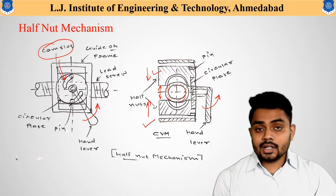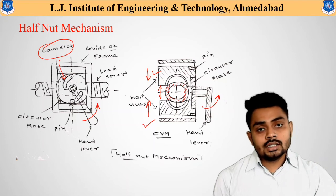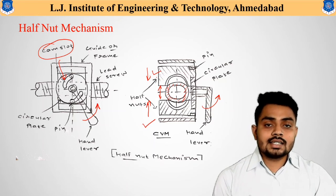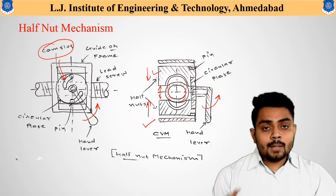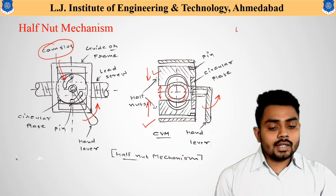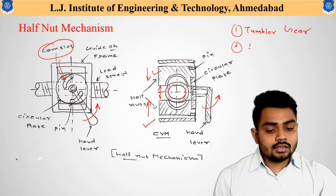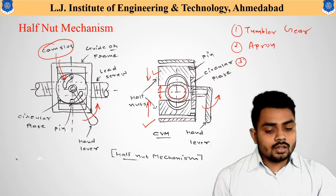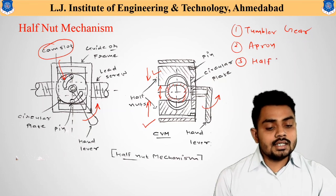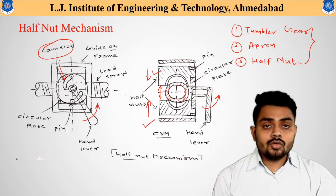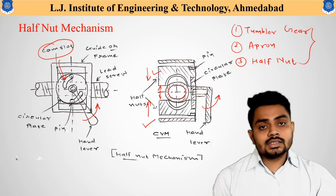The half nut mechanism provides the connection between the carriage and the lead screw, and it needs to be operated only during thread cutting operations. In all other operations, the half nut remains disengaged. The combination of all three mechanisms — the tumbler gear mechanism, the apron mechanism, and the half nut mechanism — is required to obtain automated movement of the cutting tool for machining operations.